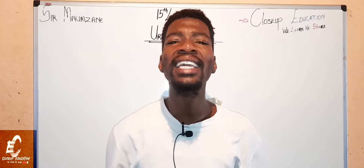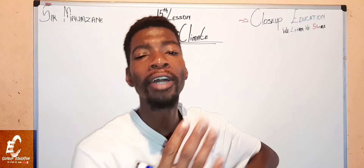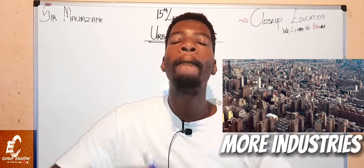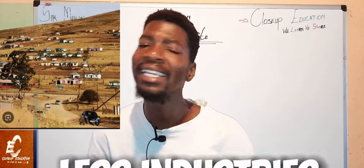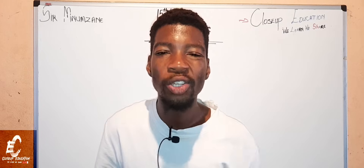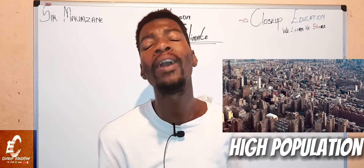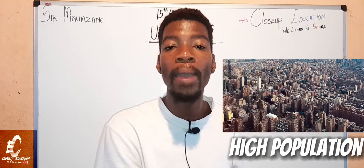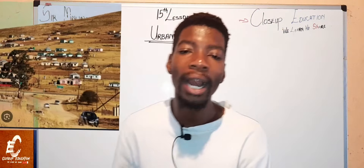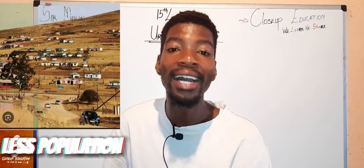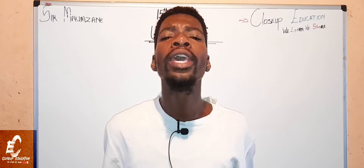Our fourth difference is that in an urban area there are more industries, while in a rural area there are less industries or none. Our fifth and last difference is that in an urban area there are a lot of people — overpopulation — meaning there are a lot of cars and transport vehicles, while in a rural area there are less people, less vehicles, and less transportation.